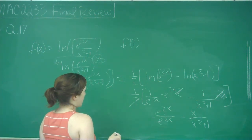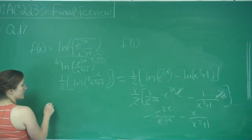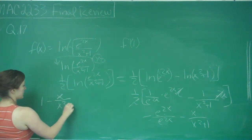And then they want to know f prime of 1. Well, we know that this then will equal, I'll rewrite it over here, but it's 1 minus x over x squared plus 1.